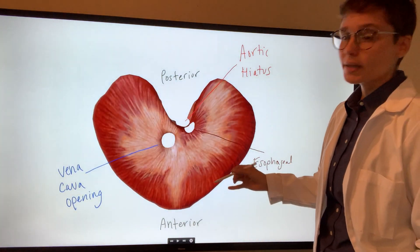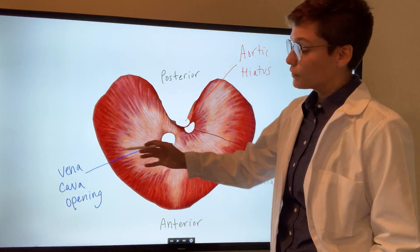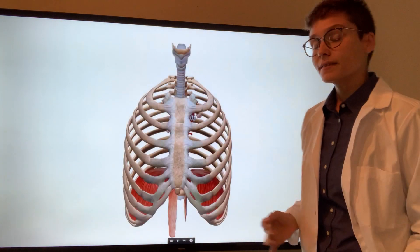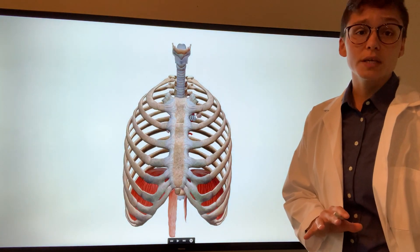The diaphragm has several openings that provide for inferior access for the vena cava, the esophagus, and the aorta. The diaphragm is the primary muscle involved in respiration.